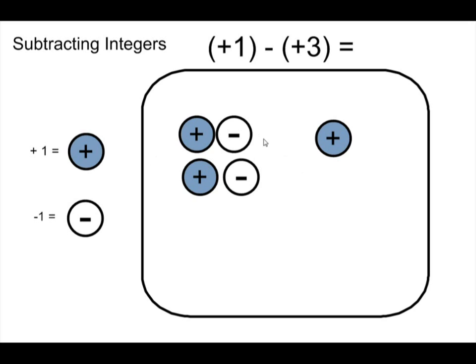So I'm still looking at positive 1, but now I can take away three positives from this group and I will cross them out again. Take away one positive, two positives, three positives. I took away three positives. I'm left with two negatives. That gives me the answer. Positive 1 take away positive 3 equals negative 2.